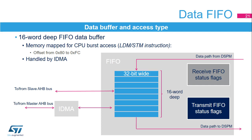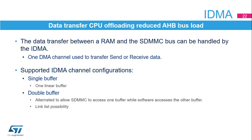A 32-bit-wide, 16-word-deep FIFO is used to buffer data between the slave AHB domain and the IDMA on the master AHB domain. A single data FIFO is the data source for the data path transmit and receive packets. Depending on the DPSM status, the data path FIFO can be disabled, transmit enabled, or receive enabled. Dedicated receive and transmit FIFO status flags are available to ease firmware implementation. When enabled, the IDMA transfers data between the FIFO and an external memory, offloading the CPU. The integrated DMA inside the SDMMC transfers data between memory and the SDMMC FIFO, allowing reduction of the CPU processing and AHB busload.